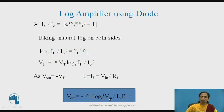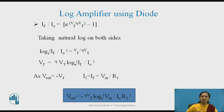These log amplifiers are widely used for signal processing. Log amplifiers are used in digital computers. To minimize the effect of the ideality factor eta, we can replace the diode with a transistor circuit. This increases the capability of the log amplifier to handle a wide range of signals.